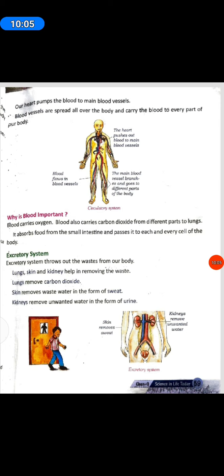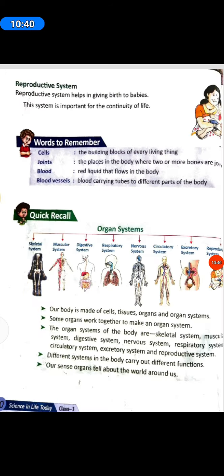Excretory System. The excretory system throws out the wastes from our body. Lungs, skin and kidneys help in removing the waste. Lungs remove carbon dioxide. Skin removes waste water in the form of sweat. Kidneys remove unwanted water in the form of urine. Reproductive System. The reproductive system helps in giving birth to babies. This system is important for the continuity of life.